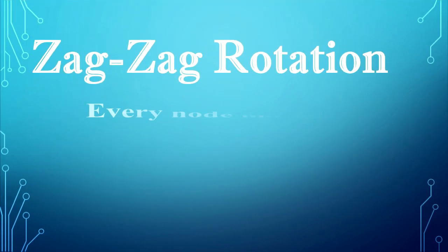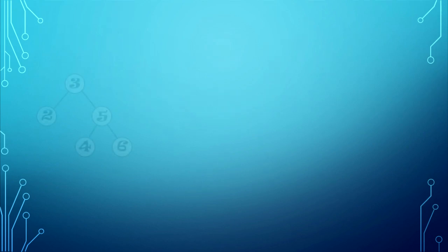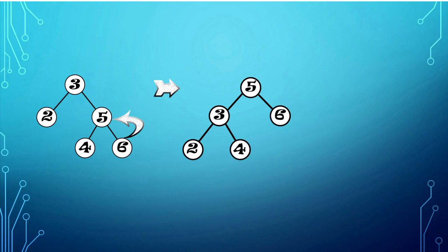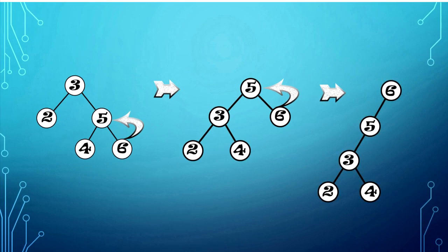Zag-zag rotation. In zag-zag rotation, every node moves two positions to the left from its current position. We will splay element 6 using zag-zag rotation. The element 6 will be moved twice to the left. In the first rotation, element 5 will be the new root node, and the previous root node, which is element 3, will be the left child, and the right child will be element 6. Then, move element 6 to the left again. The result will be: element 6 will be the new root node, and element 5 will be its left child along with the other nodes.